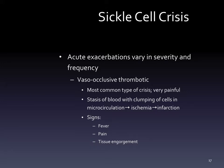Sickle cell crises are acute exacerbations that vary in severity and frequency - not every child presents the same. The vaso-occlusive thrombotic crisis is the most common type and is very painful. Blood becomes stasis and obstructs the microcirculation, leading to decreased oxygen to those tissues and can result in cell death. Signs include fever, pain, and tissue engorgement.